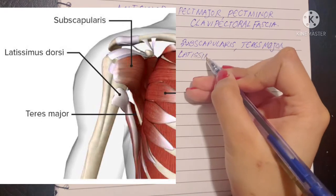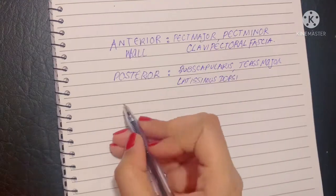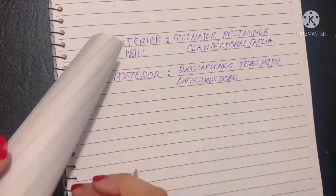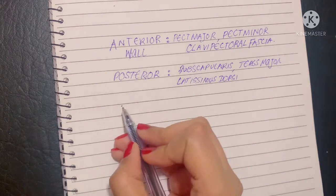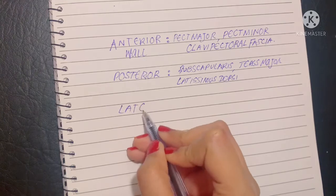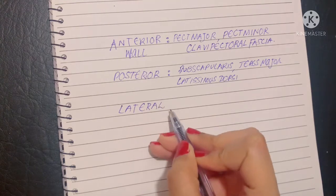Let's move on and talk about the lateral wall. The lateral wall is facing the humerus or the arm, so the lateral wall is obviously going to be made up of the muscles of humerus. These are the coracobrachialis and short head of biceps.